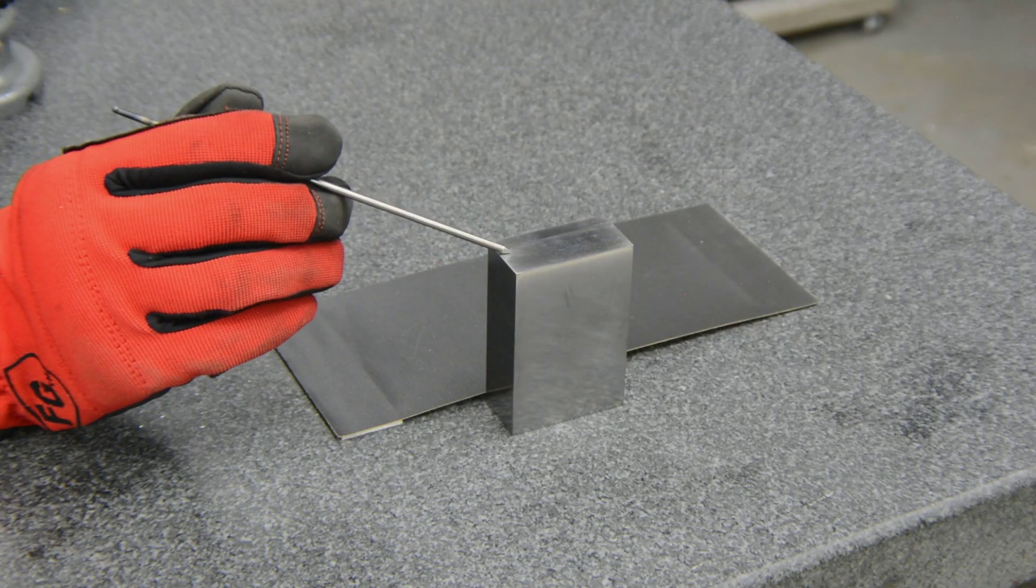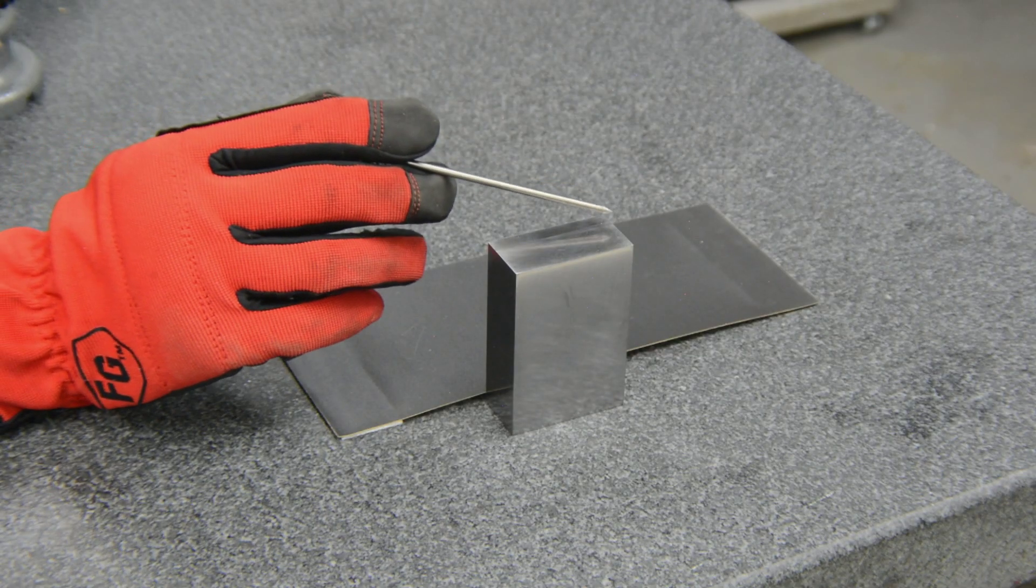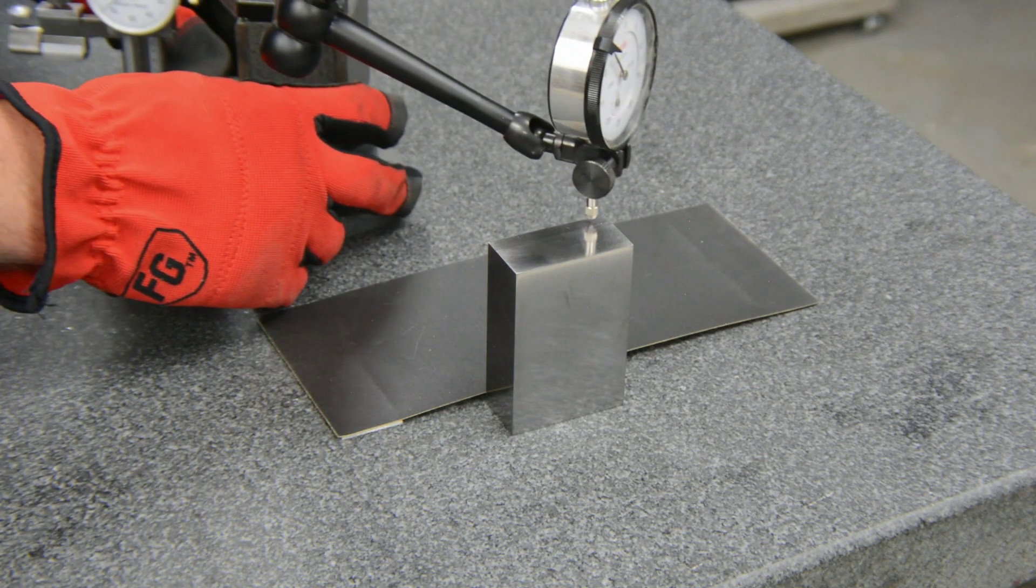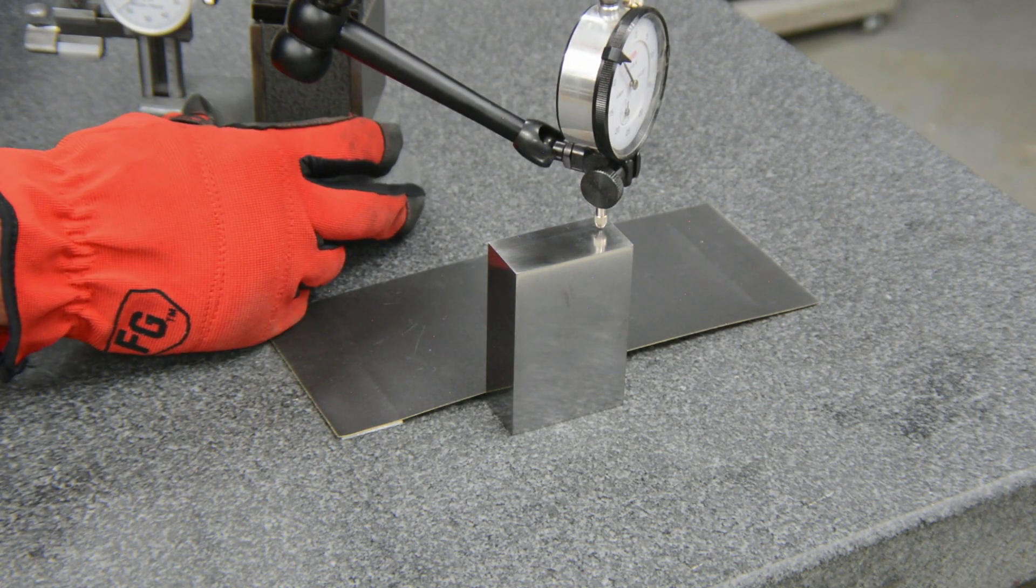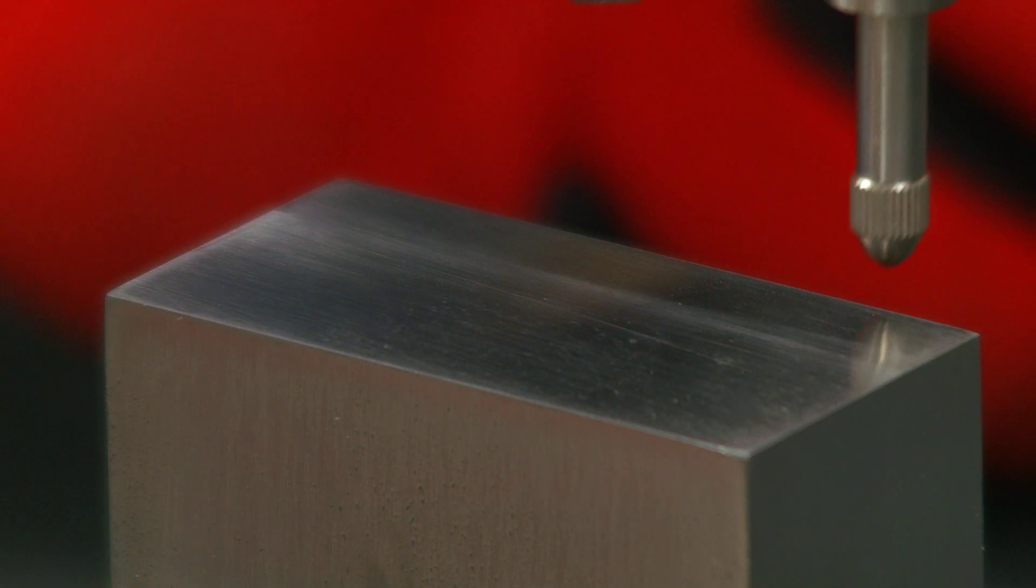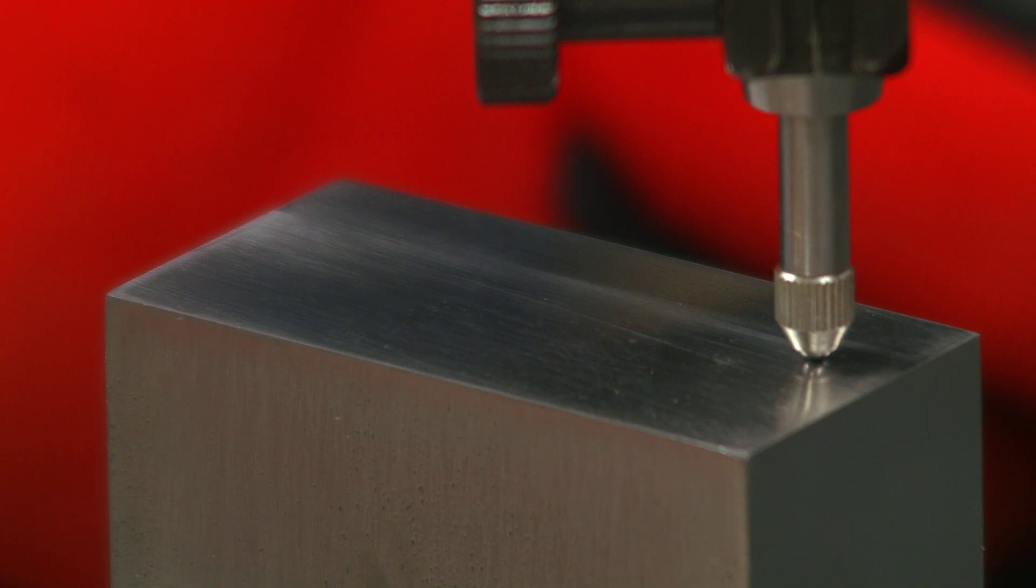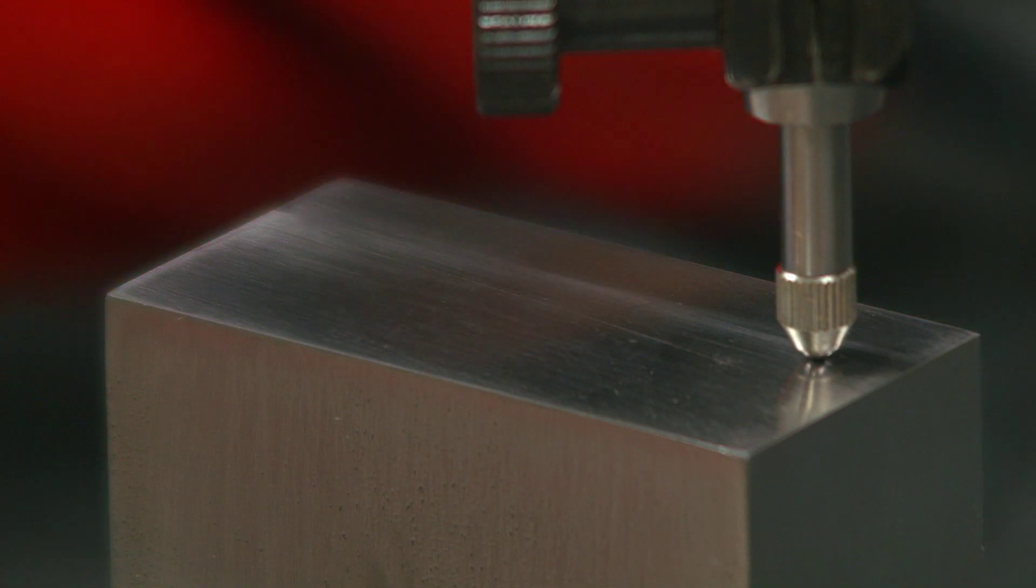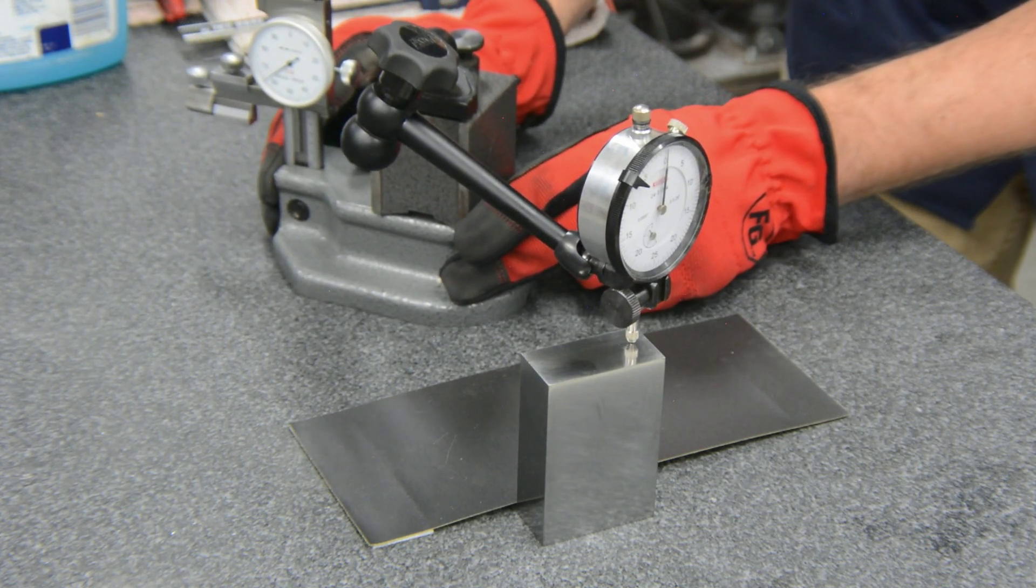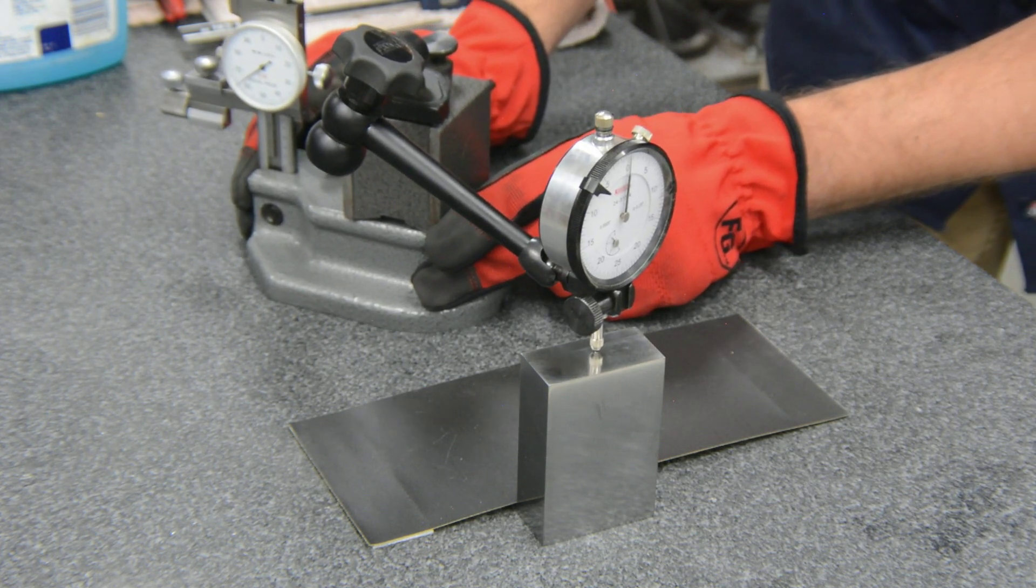To see how well we did, we will check the sides of the part by running a dial indicator across the surface. The dial indicator is held by a magnetic holder and attached to a height gauge. We set the indicator to zero and move slowly and gently across all the block's edges. Our part is within one and a half thousandths on all sides, which is very good.